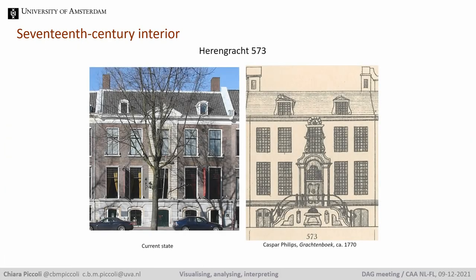Another important source of information is the house itself, which is still standing — so here we have no doubt about its location. However, the house has been heavily modified over the centuries, both on the facade and inside. The most significant change took place in 1868 with the replacement of the original entrance door with a window. In these images you can see the current state of the facade on your left and how it appeared in the second half of the 18th century on your right — the earliest visual reference available for this house from which we can still see the entrance in its original location.